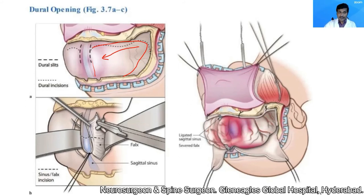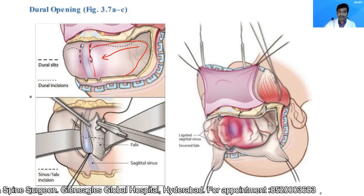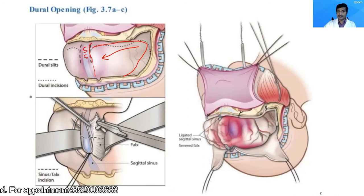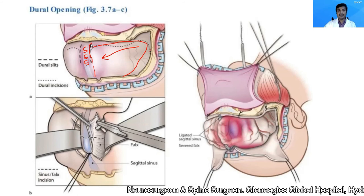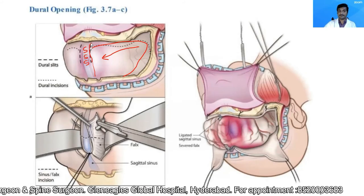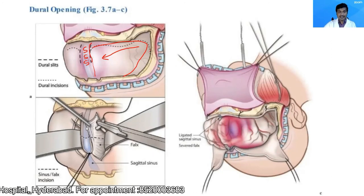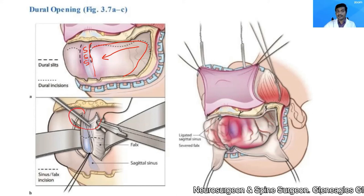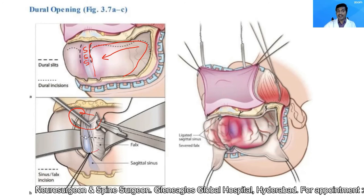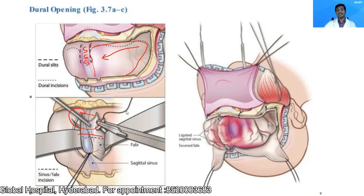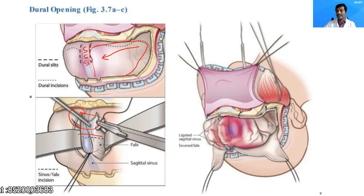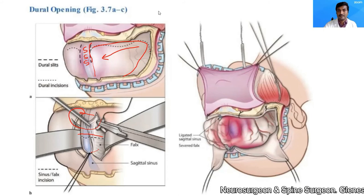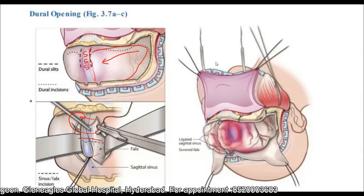To ligate the superior sagittal sinus, take dural slits on either side of the sinus, as low as possible near the crista galli. Then perform double ligature of the superior sagittal sinus — pass a needle through the parenchyma, place a second ligature, and cut the sinus between the two ligatures. These ligatures must not slip; a double ligature may be taken if required. This completes the dural reflection.